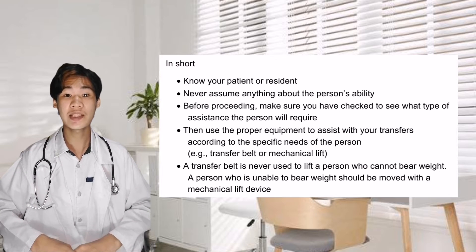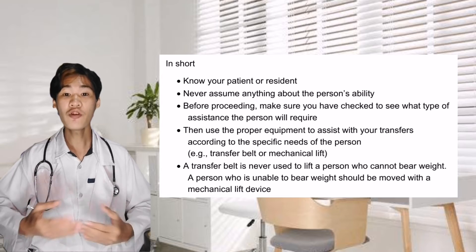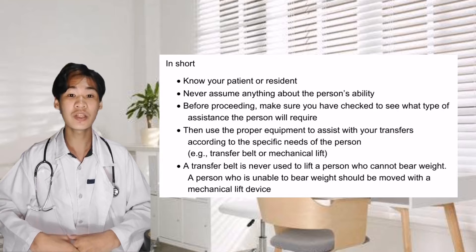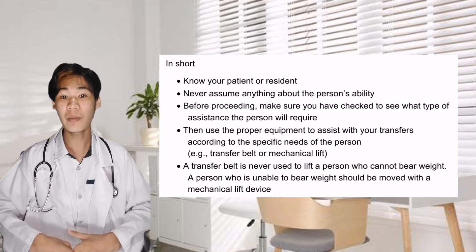Additional safety considerations. When transferring, you will vary the assistance you provide depending on the person's ability to help — that is, the person's ability to bear weight on one leg or two. You may only need to provide a steadying hand, or you may totally lift the person from one place to another. Consider all factors that affect the person's weight-bearing ability. For example, surgery involving one or both legs may limit weight-bearing, as will leg paralysis due to a stroke or other injury. Know your patient or resident — never assume anything about their ability. Check what type of assistance the patient will require, and use proper equipment such as a transfer belt or mechanical lift according to the patient's specific needs.